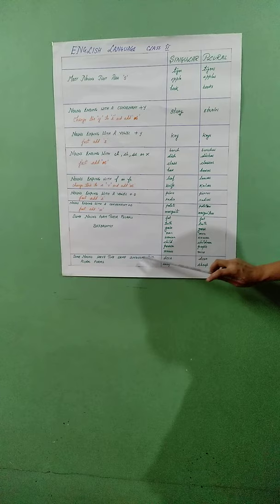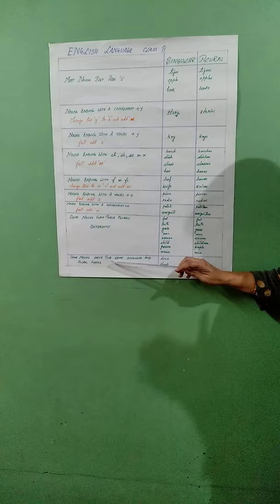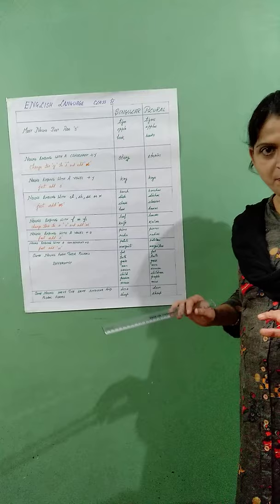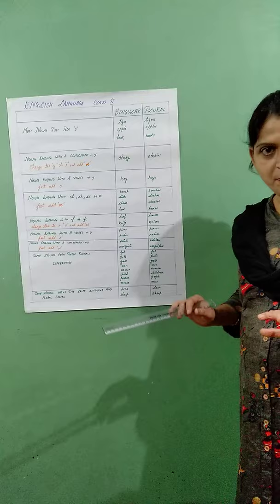The last rule: some nouns have the same singular and plural forms. These words are used in the same way in both singular and plural — there is no difference. Like deer and sheep. I hope children, you must have understood today's topic clearly. An assignment is also going to be attached, so please do the assignment in your workbooks. Thank you.